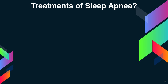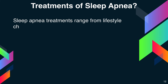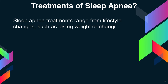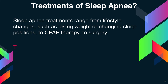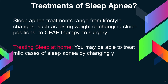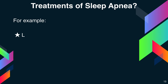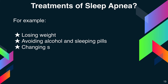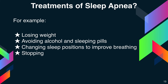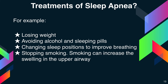Treatments for sleep apnea range from lifestyle changes — such as losing weight or changing sleep positions — to CPAP therapy or surgery. For mild cases, you may be able to treat sleep apnea by changing your behavior, for example: losing weight, avoiding alcohol and sleeping pills, changing sleep positions to improve breathing, stopping smoking (which increases swelling in the upper airway), and avoiding sleeping on your back.